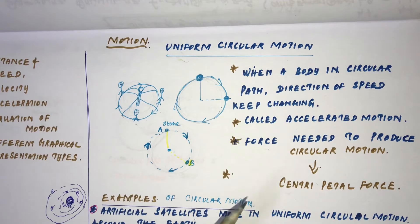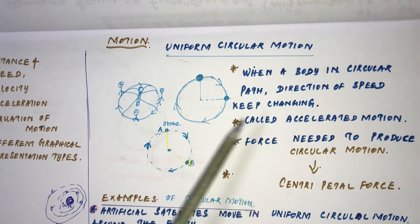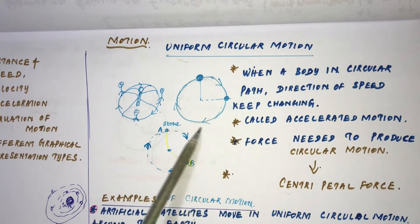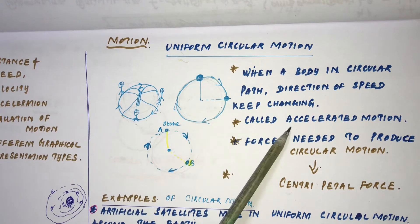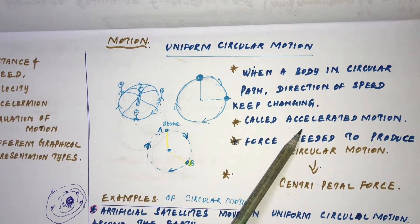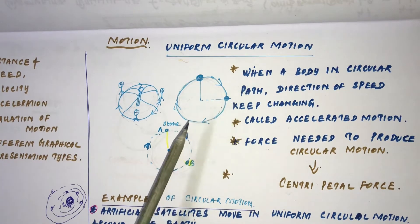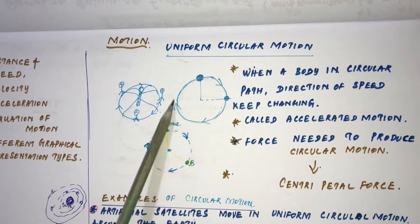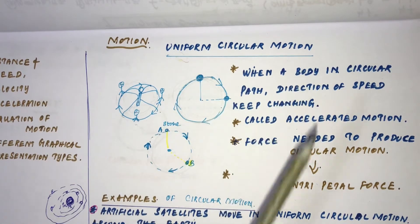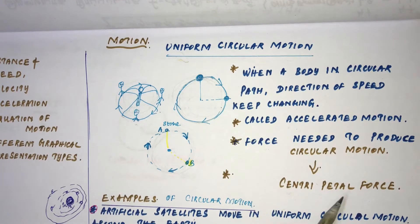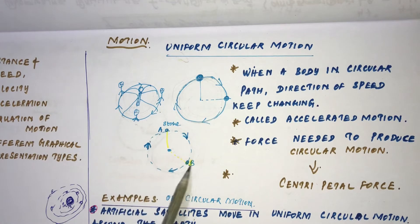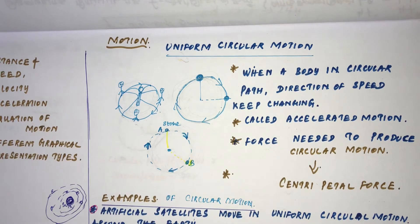To summarize: when the path direction and speed keep on changing, that is called accelerated circular motion. When an object moves with the same speed in a circular path, that is called uniform circular motion. The force needed to produce uniform circular movement in a circular path is called centripetal force.